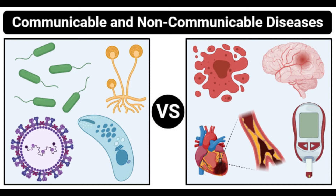Communicable vs. Non-Communicable Diseases: Definition, 17 Differences, Examples. Communicable diseases are the diseases that are caused by infectious agents and can be transmitted from an infected person to other people, animals, or other sources in the environment.